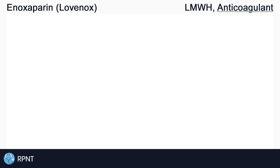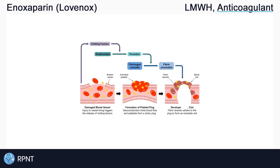Anticoagulants are drugs that decrease blood clotting by inhibiting clotting factors. Clotting factors are proteins in the blood that make up one of two important steps that cause our blood to clot, the other being platelet aggregation.